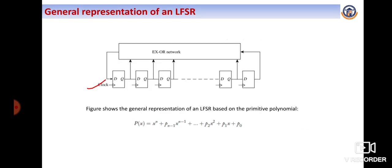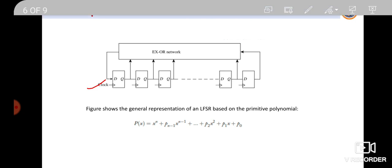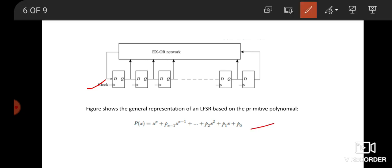This is the main concept of LFSR. This is the general polynomial representation of LFSR: P(X) = X^N + P(N-1)·X^(N-1) + ... + P2·X^2 + P1·X + P0·X^0. This diagram shows the general representation of LFSR and its polynomial representation.